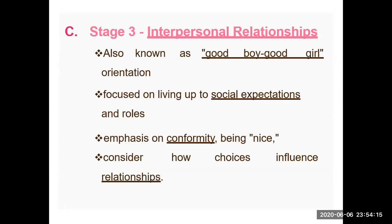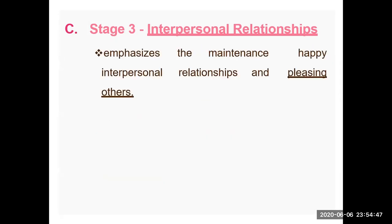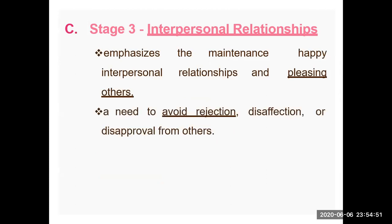In the case of interpersonal relationships, this is like the 'good boy and good girl' concept. At this stage, children know the rules and regulations — if they do good work, they are recognized as a good boy or good girl, and if they do bad work, they are recognized as bad. This relationship affects their development, and it emphasizes happy interpersonal relationships and pleasing others. They also learn how to avoid rejection, disapproval, or disaffection from others. They are now quite mature and try to maintain interpersonal relationships without hurting others.